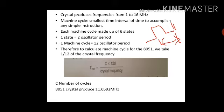Each machine cycle is made up of six states: state 1, state 2, state 3, state 4, 5, and 6. Each state consists of two oscillator periods. One machine cycle is equal to 12 oscillator periods.